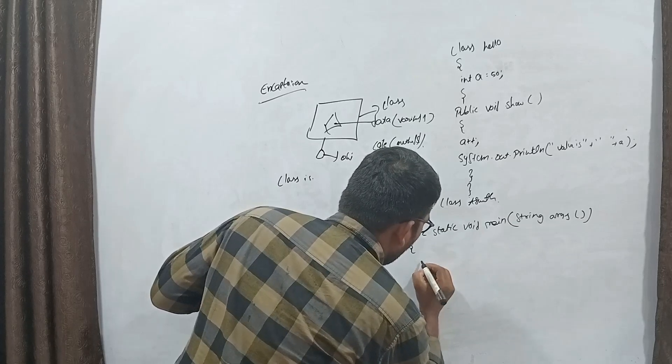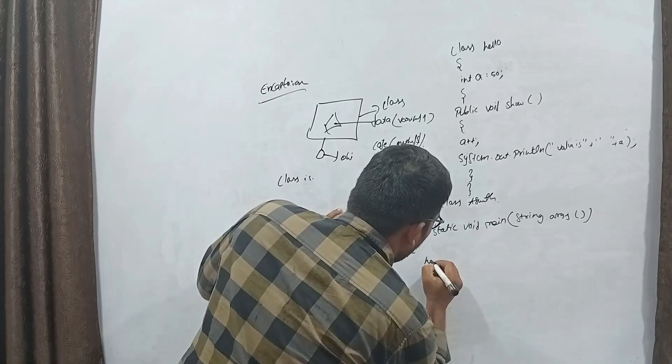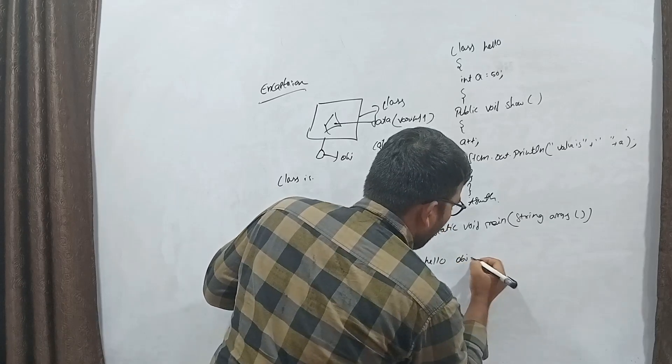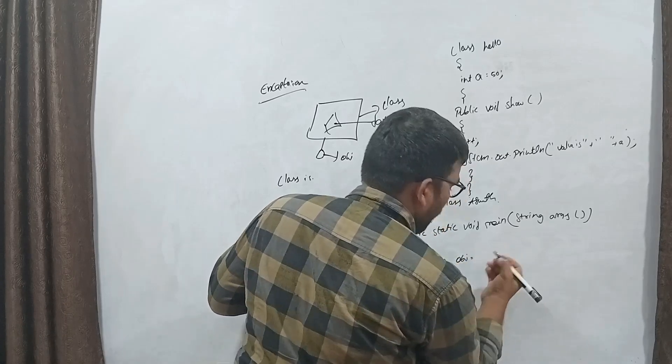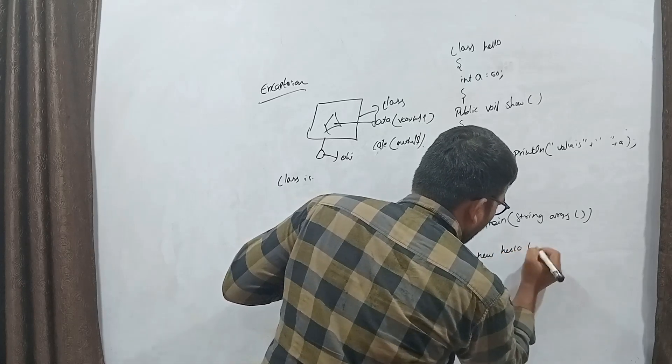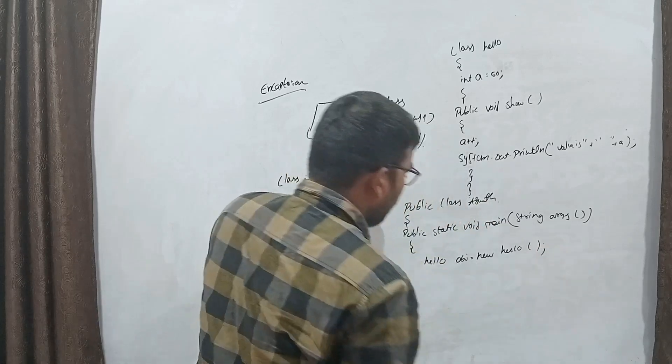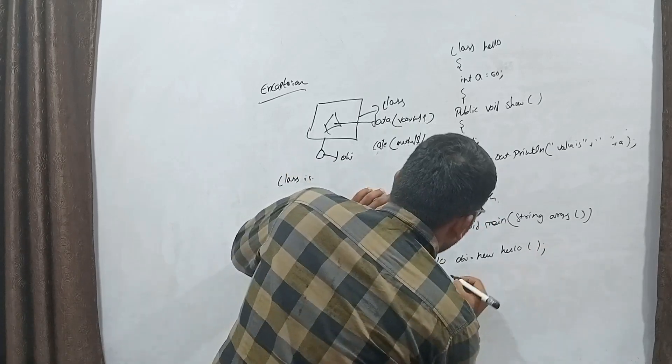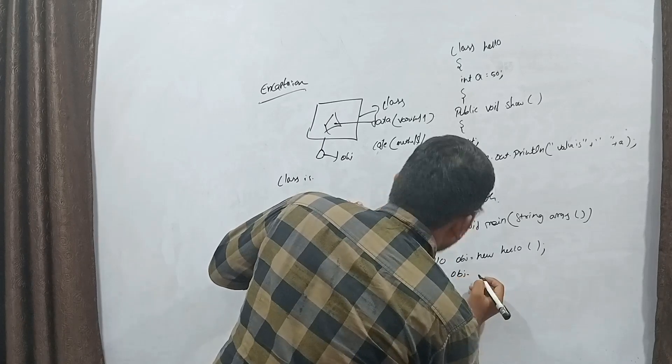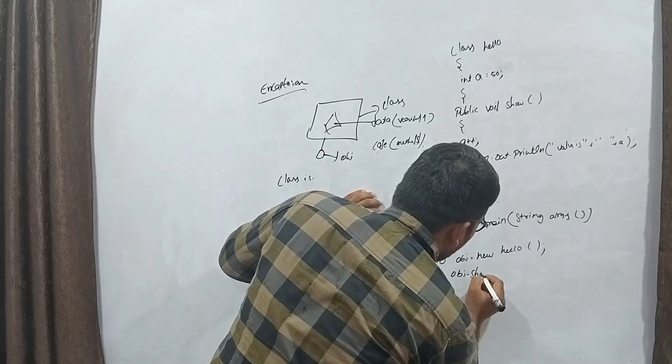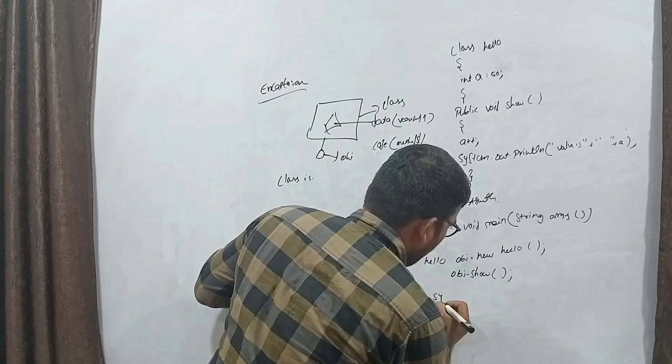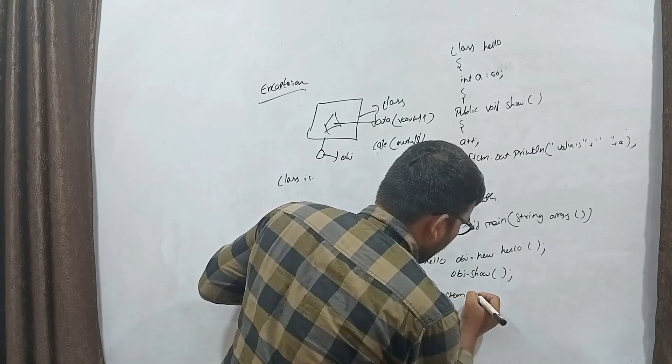Take the object, class name hello, object. Object means take any name. Hello. Call the variable, object dot stroke value. System object.